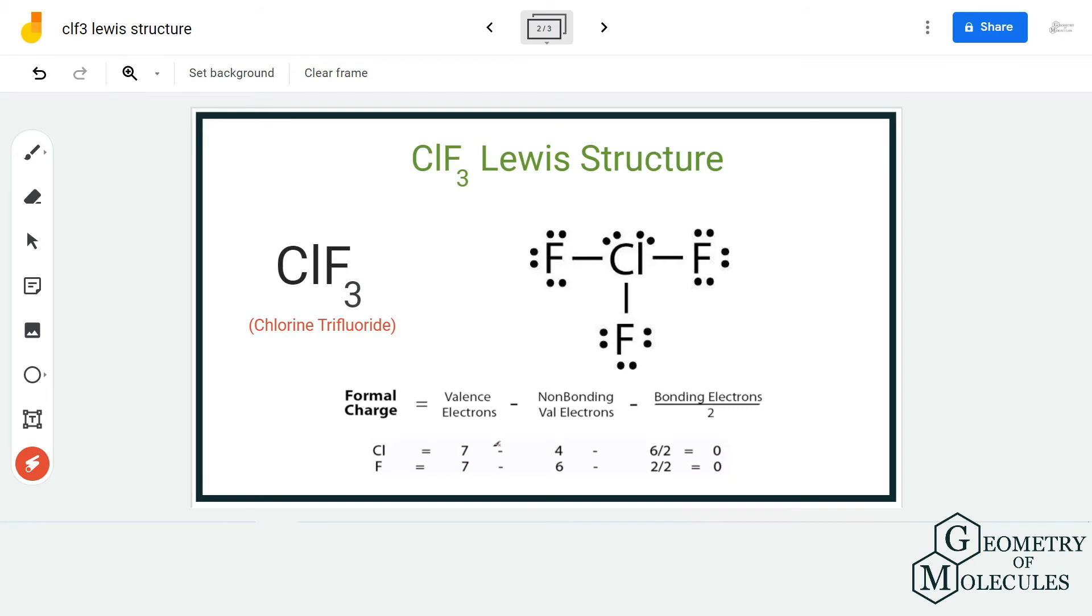Similarly, for fluorine we have seven valence electrons, of which six are non-bonding and two are bonding, and it also has a formal charge of zero. So all the atoms in this molecule have a formal charge of zero, and hence this is the relevant Lewis structure for ClF3.